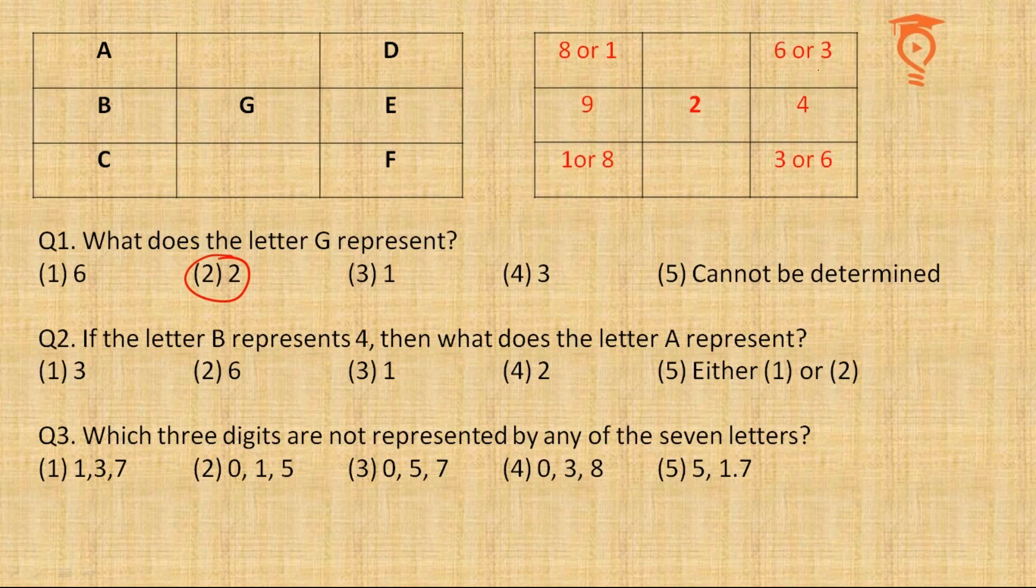If the letter B represents 4, what is B's position? For this question these are A, B, C. If B is 4, for question number 2, then what does A represent? In the case of 4, A would be 6 or 3.